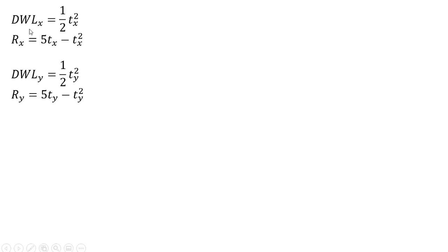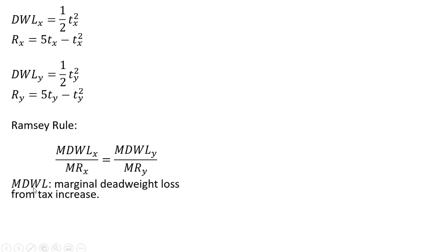So writing the deadweight loss and revenue for each market. And now what is Ramsey's rule? This is Ramsey's rule right here. Let's define these things: MDWL is the marginal deadweight loss from a tax increase, and MR is added revenue raised from a tax increase. So ideally, you want the ratio of the marginal deadweight loss to the added revenue from the tax to be as small as possible. You want to minimize the deadweight loss from raising a dollar of tax revenue.